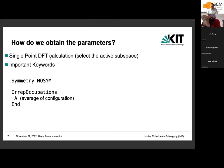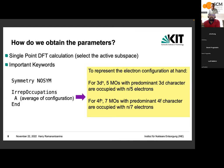How do we obtain the parameters? First, we do a single-point DFT calculation that allows us to select the subspace for ligand field treatment. The important keywords in ADF are: no symmetry, and the fractional occupations keyword, where you define the average-of-configuration. For a 3d^n system, you occupy five MOs with predominant 3d character with n/5 electrons each. Similarly for 4f^n, you occupy seven MOs with predominant 4f character with n/7 electrons each.